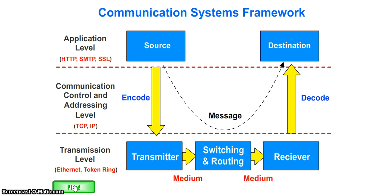And using those protocols it can be read. So the stages are: the application level where the message is created and viewed, the communication control and addressing level where the message is encoded before sending and decoded after sending, and the transmission level where the message is switched and routed between devices using the Ethernet and token ring protocols.